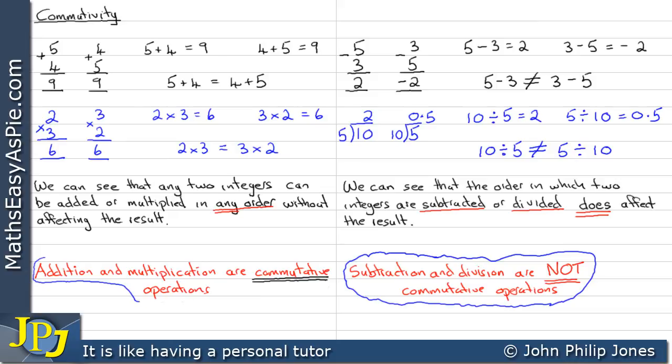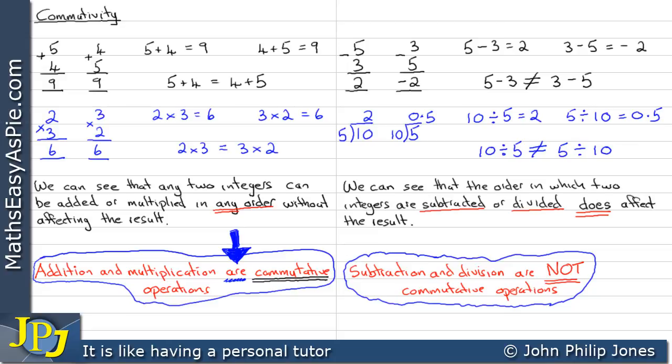Compare that with addition and multiplication and we can see they are commutative. Put simply, commutativity is to do with the order of these basic arithmetic operations. Sometimes the order in which you perform them doesn't matter, and in other cases it does, as shown by the examples in this video.